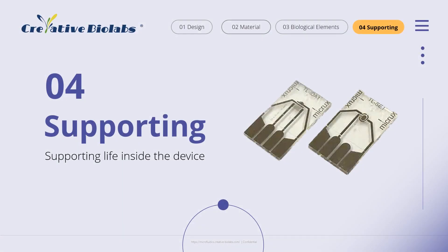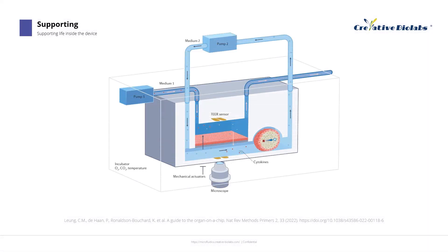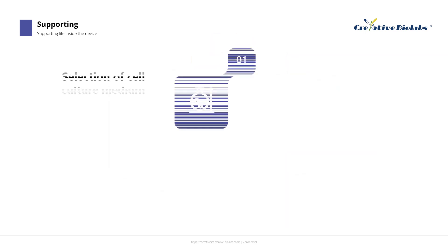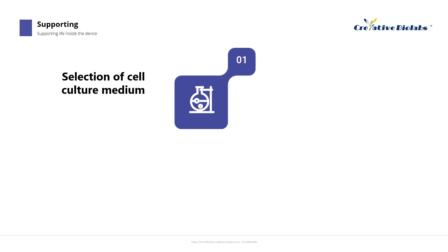The final part involves supporting life inside the device. The OOC system will be operated with peripheral equipment including pumps, incubators, sensors, and microscopes to properly maintain, stimulate, and monitor cells inside the OOC system. This mainly requires attention to the selection of cell culture media. For single OOCs involving only a single cell type, media originally formulated for routine culture can be similarly employed. The complexity increases when generating single or multiple OOCs involving multiple cell types, where optimized co-culture media must maintain the viability and functional phenotype of each distinct cell population.